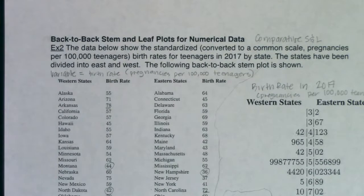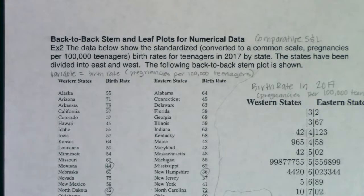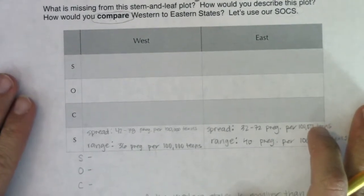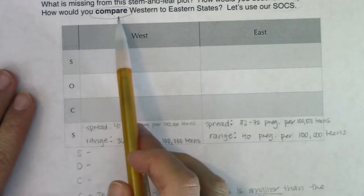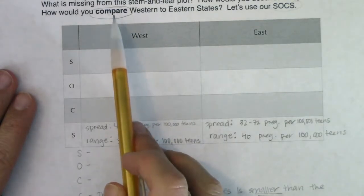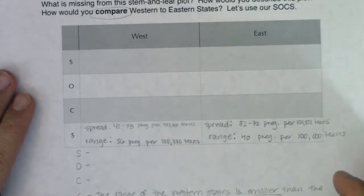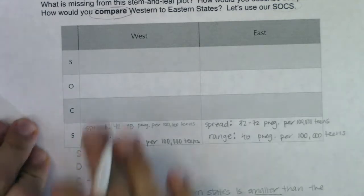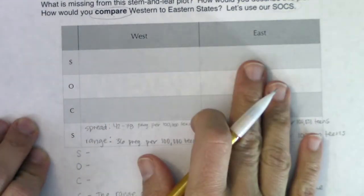In example two we were looking at back-to-back stem-and-leaf plots — sometimes called comparative stem-and-leaf plots. We had pregnancy rates for the western states and the eastern states. The first time around, all we had enough knowledge for was the spread. I mentioned it then but I'll re-mention it: anytime you're comparing two data sets, I want you to use comparative language — something like 'this spread is larger than that one' or 'this median is smaller than that one.'